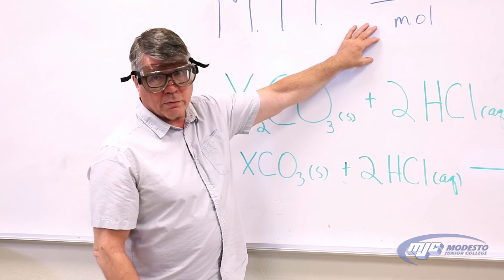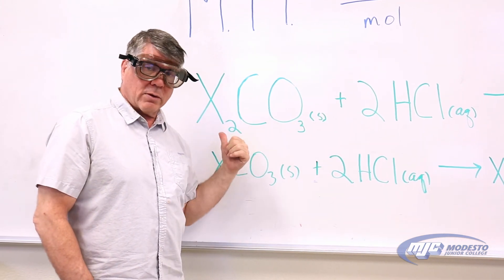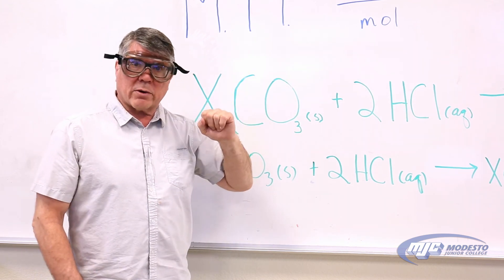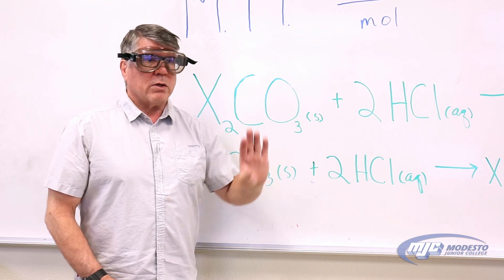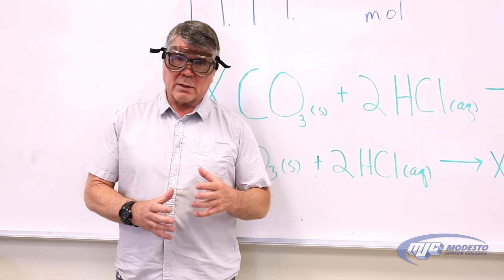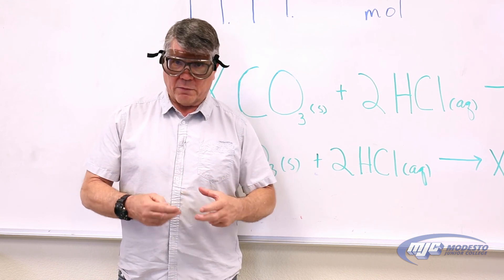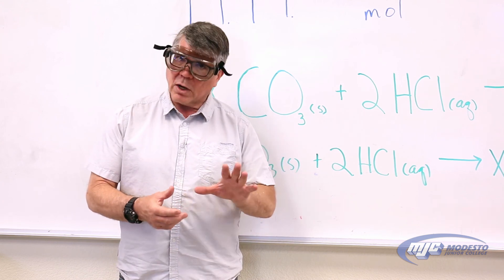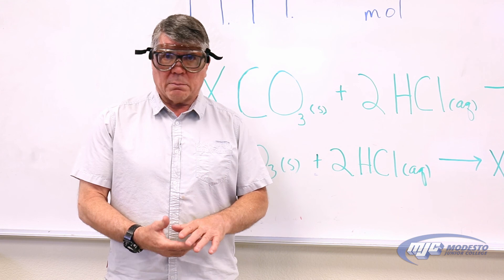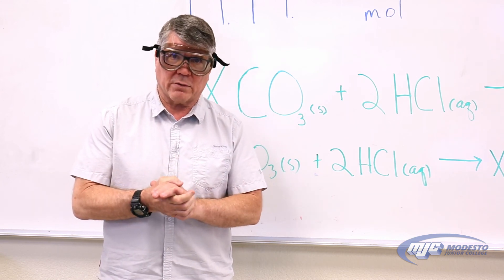Our goal is to find moles of our unknown. Because it's a one-to-one mole ratio between the carbon dioxide gas given off and our unknown, if we can figure out how many moles of carbon dioxide gas are given off, we know how many moles of our unknown we have. The whole setup we're going to use today is aimed at determining how many moles of carbon dioxide gas are given off. It gets a little complicated because some of that CO₂ gets dissolved in the water solution and stays there, while some goes up above the solution in gas form.